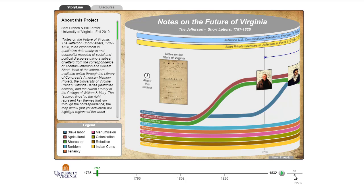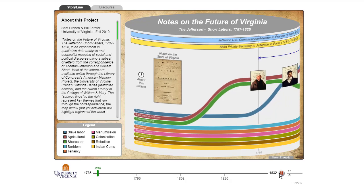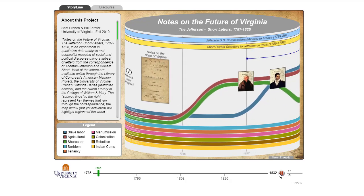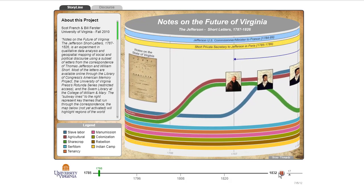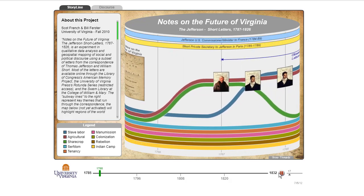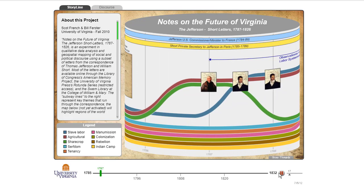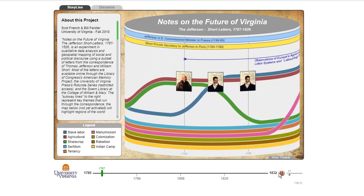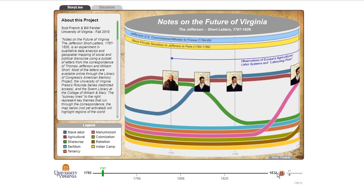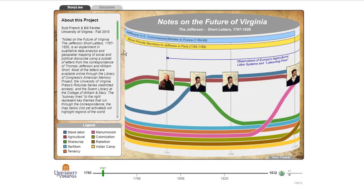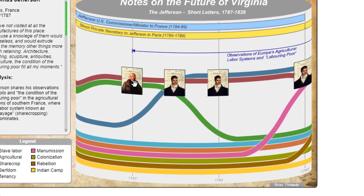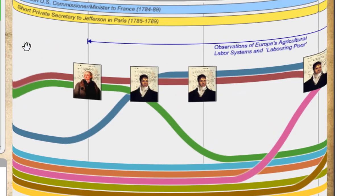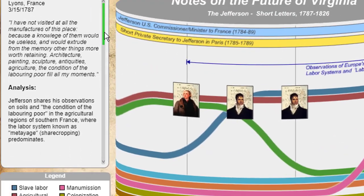I'll play the timeline real slowly here. You can see each one of the lines represents when they talked about a particular item, and then each of these things represents a letter. When you click on it, it brings up the letter.